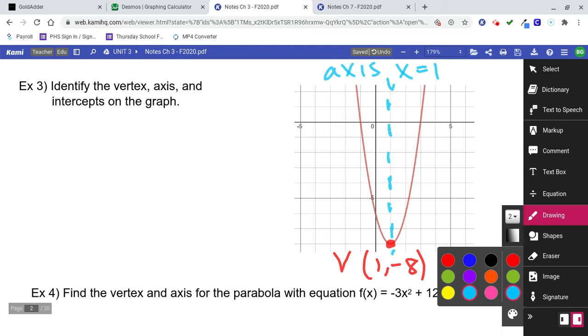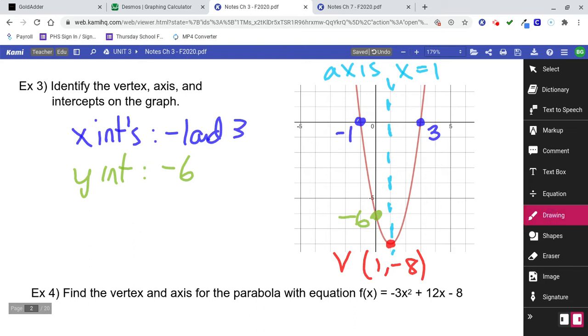So the intercepts, there are a couple of x-intercepts at negative 1 and 3. But there's also a y-intercept at negative 6. So let's label those x-intercepts negative 1 and 3. So we've got the vertex, the axis, the x and y-intercepts. Those are all important things to be able to notice on a graph.